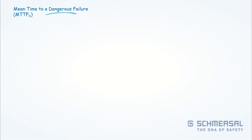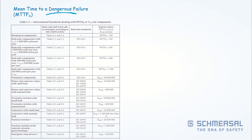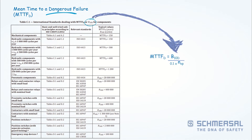It also looks at the mean time to a dangerous failure, which is the wear and tear on electrical and mechanical components. Here we have to do some calculations. We have to obtain the B10D value from the manufacturer or from the table in the standard, and do a quick calculation because we have to determine how often we are relying on the safety function to activate — so we have to calculate the wear and tear.